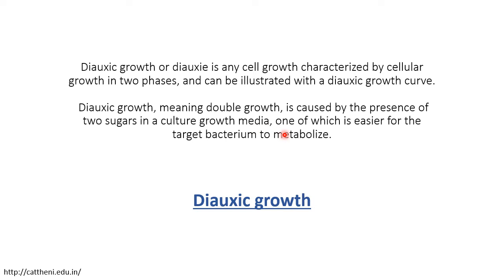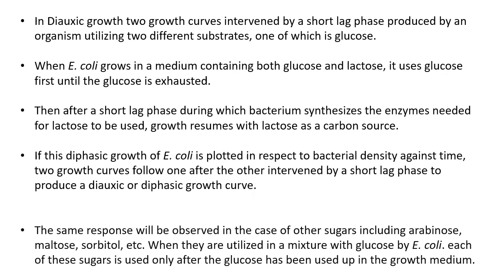From the two sugars which are present in the culture media, one of them is very easy to metabolize for the bacteria. So it utilizes that simple sugar — for example, glucose — first, and then it switches towards the other sugar. That's the reason why we observe two lag phases and two log phases in some cases. When we observe this type of two-phase growth, we term it as diauxic growth. In diauxic growth, two growth curves intervened by a short lag phase are produced by an organism which has the ability to utilize two different substrates, but it cannot utilize both substrates simultaneously. So it will opt for the one which is easier to metabolize first.